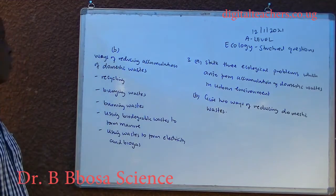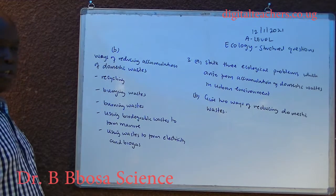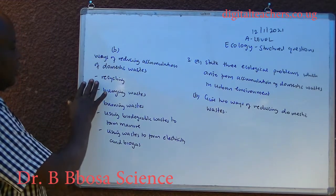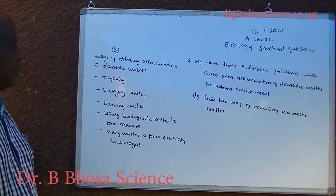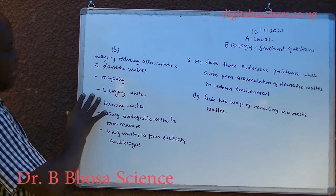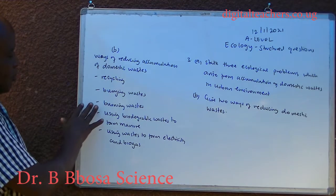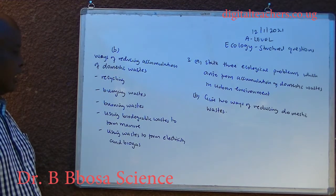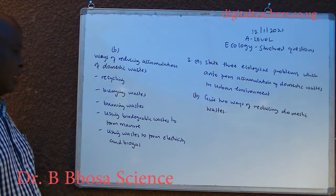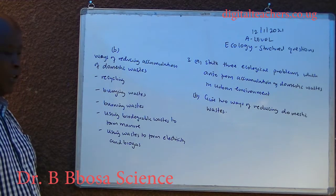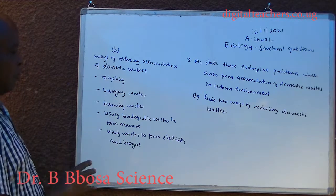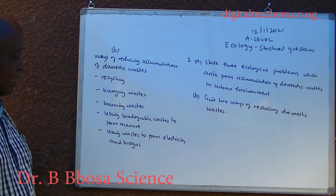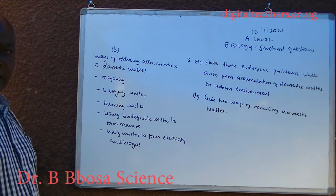Ways of reducing accumulation of domestic wastes: recycling, burning wastes, using biodegradable wastes to form manure, and generating electricity and biogas.